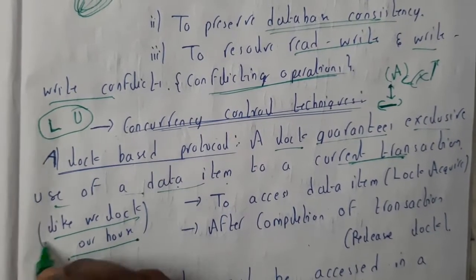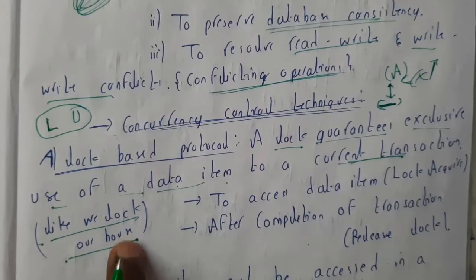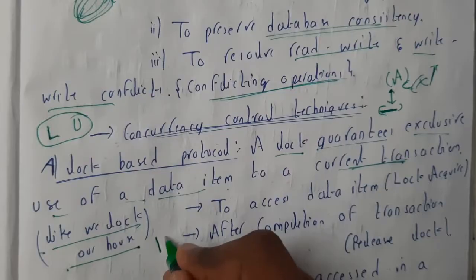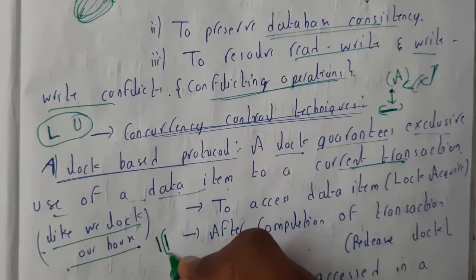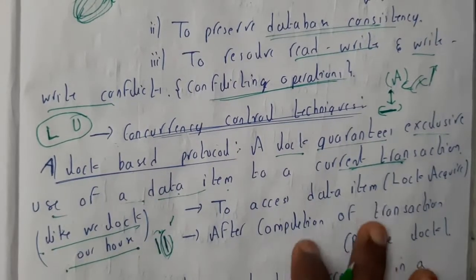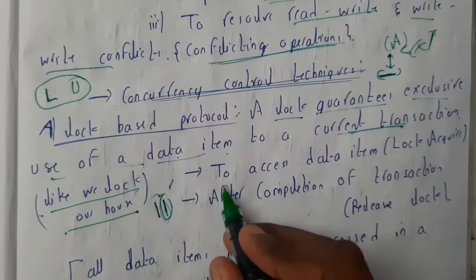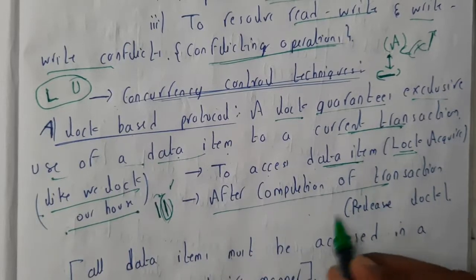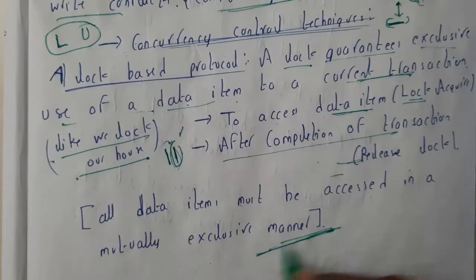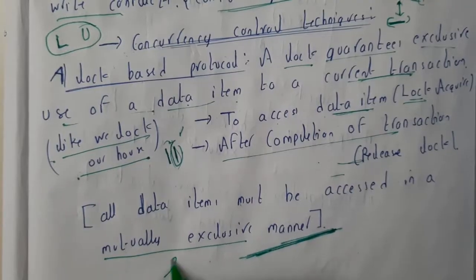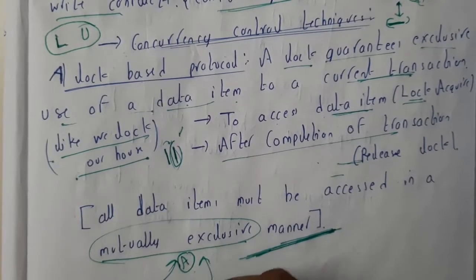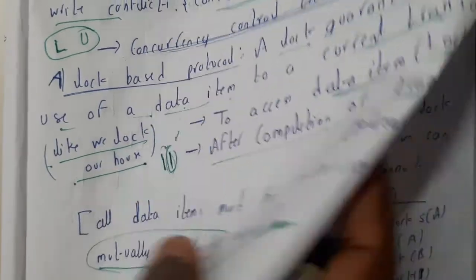It's like locking your home — you lock it with a specific key and only that key can unlock it. If you locked variable A and variable B, you cannot unlock A with the key of B; they are completely separate. Locks are used to acquire a data item and released upon completion, and all data items must be accessed in a mutual exclusion manner — meaning only one process accesses a shared variable at a time.